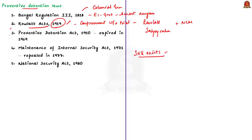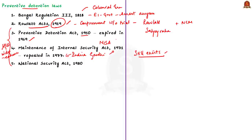After independence, the first preventive detention law was made during the prime ministership of Jawaharlal Nehru by enacting the Preventive Detention Act of 1950. After this act expired in 1969, the then Prime Minister Indira Gandhi brought in the controversial Maintenance of Internal Security Act in 1971, famously called MISA. This act was used draconianlly to suppress anti-government voices during the Emergency period, and many leaders were detained under MISA. Immediately after the new government came to power in 1977, this act was repealed. However, when Indira Gandhi came back to power again in 1980, she brought the National Security Act of 1980, which is still in force.